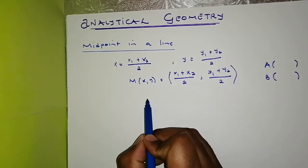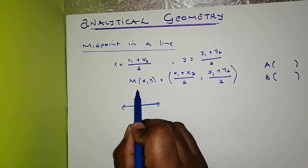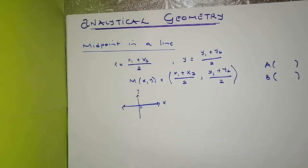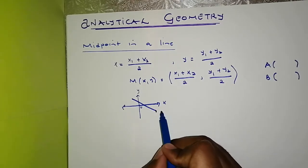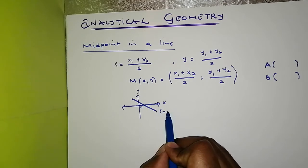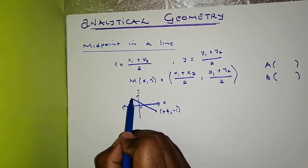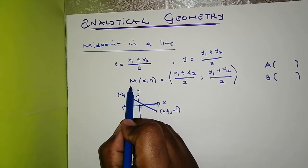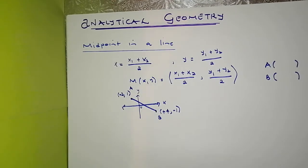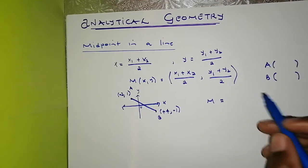In a Cartesian plane — here's the y-axis and the x-axis — let's say we've got a line, and the coordinates of one point are positive 4 and negative 1, and the coordinates of the other point are negative 2 and 1. Let's call this point A and this point B, and they ask us to find the midpoint between A and B.